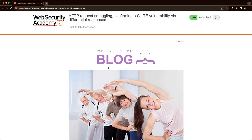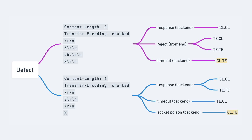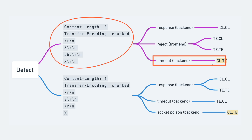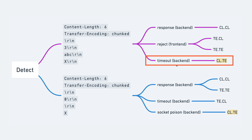The application in this lab is vulnerable to a CLTE attack, and we have to confirm that CLTE vulnerability via differential responses. The first thing we'll do is detect that CLTE vulnerability by sending the first payload. If we get back a timeout from the backend server as a response, that's a very strong indication that this endpoint is vulnerable to a CLTE attack.